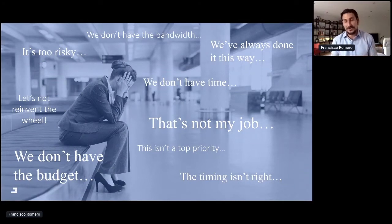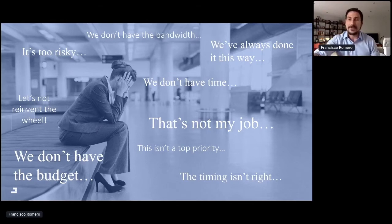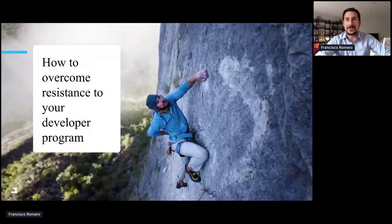Who hasn't faced these kinds of excuses or statements when they have to launch an API program in a large corporation? It's very common to hear things like: we don't have the right budget for that, that's not a priority, we have other things to do. It's very difficult to start a program when you find these kinds of excuses. So the topic today will be how can we overcome many of the resistances that we are going to encounter in this kind of context and environment.